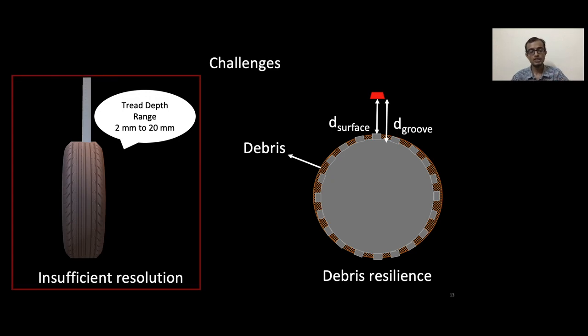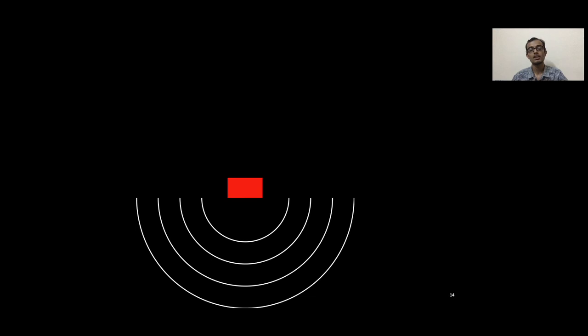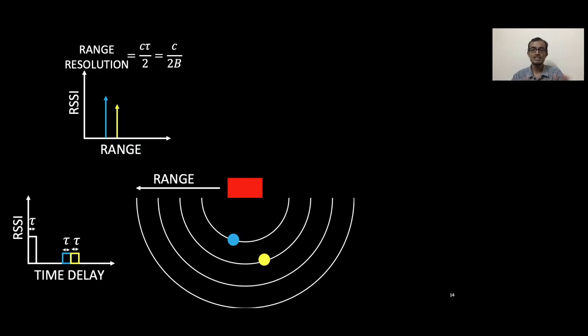Let's first look at why the first challenge is so important. Typically, radars resolve the targets along the range axis. What I mean by that is two targets can be resolved if their echoes are separated by a certain time delay. This time delay depends on the pulse width of the radar's pulse. If the time delay is greater than c tau by 2, then the radar sees it as two different echoes and there is no ambiguity. But if the time delay is smaller, the echoes merge together and the ambiguity arises.